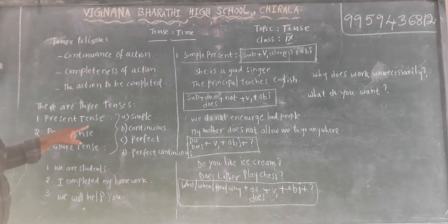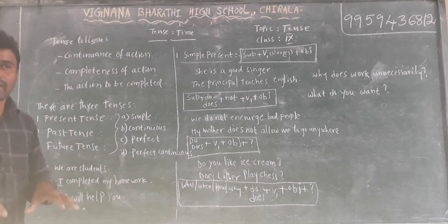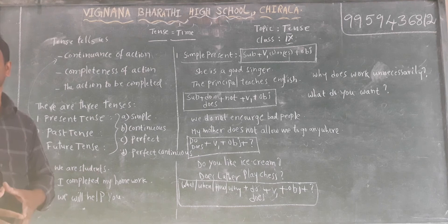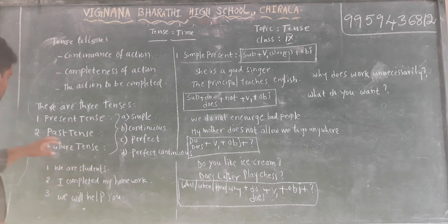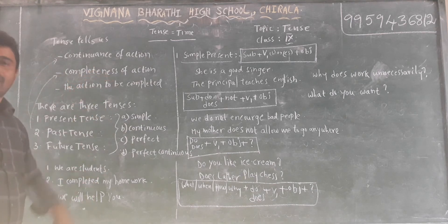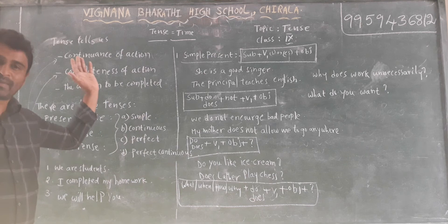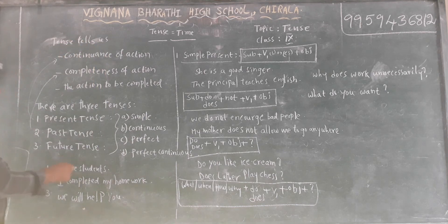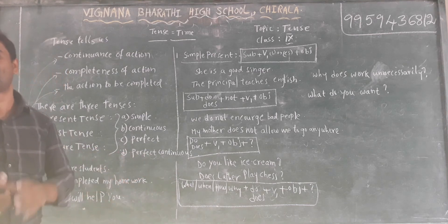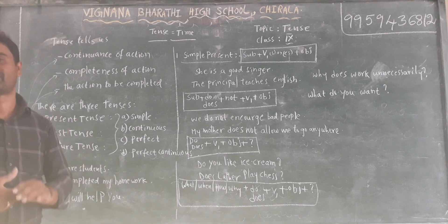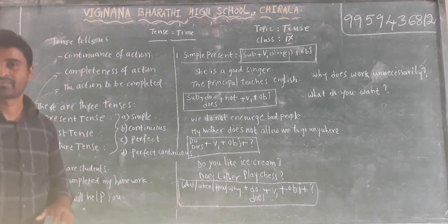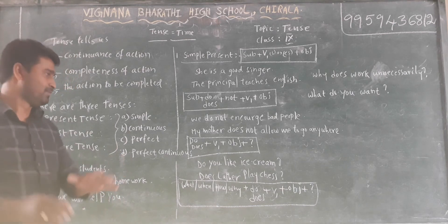Present tense means the continuous of action — the action which is going on now at the moment, at the spoken time, or in general now. Number two, past tense means completeness of action — the action has already taken place and it completed yesterday, day before yesterday, long back or long years back. And the third, future tense — the action to be completed, which means the action has not yet taken place and it will take place in the future, after sometime or after two days, after one year.